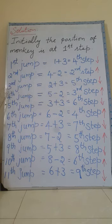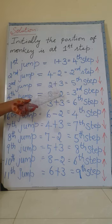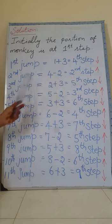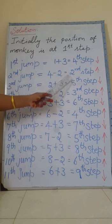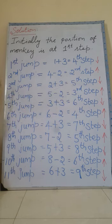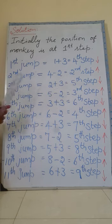Third jump: the position after the second jump is the second step. He moves three steps down, so two plus three equals five. The third jump position of the monkey is the fifth step.